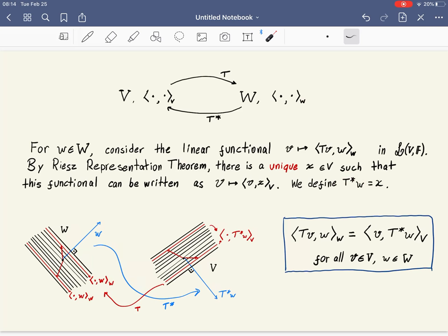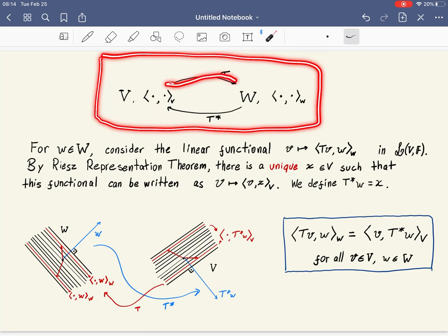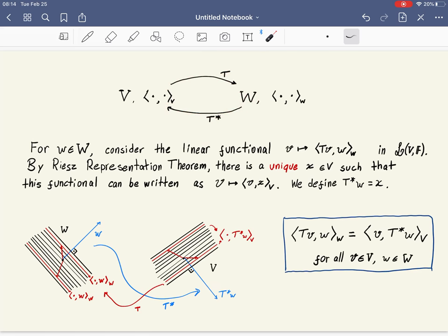That's a very mysterious definition at first. Well, let's try to give it some interpretation. First, think of this diagram. If T goes from a space V to a space W, then T star goes back from W to V.